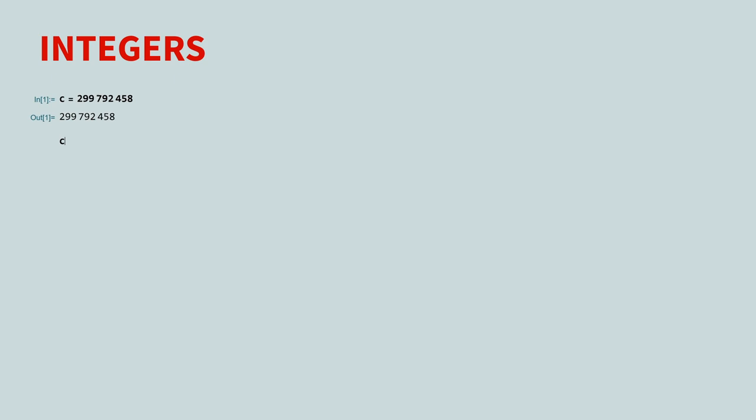If you raise this integer to the 20th power, you will see that the exact result is given. Since it requires more than one line to display, a three-dot symbol is used to let you know the output continues on the next line.